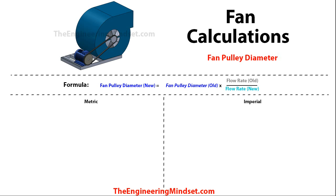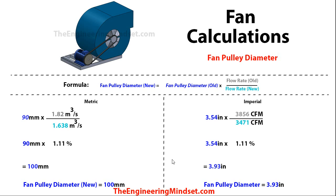Another way to calculate this — if we were to slow the motor down or change the flow rate, say half the floor is cleared out and we want to make some energy savings, then we can use this formula: the new fan pulley diameter is equal to the old fan pulley diameter multiplied by the old airflow rate divided by the new airflow rate. For this example I've put in a 10% reduction from the original design data. Doing the division gives a ratio of 1.11, and multiplying that by the original fan pulley diameter gives us a new diameter of 100 millimeters, or 3.93 inches.